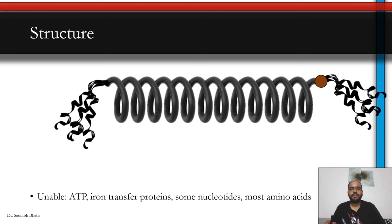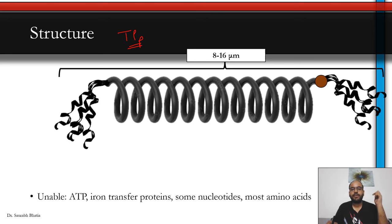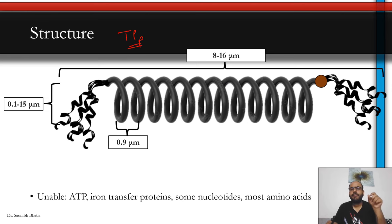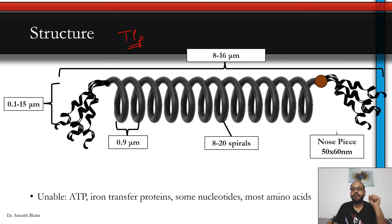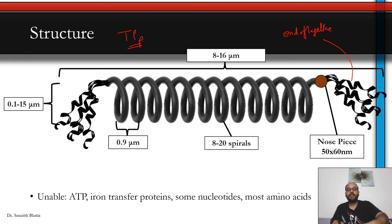This is a schematic representation of Treponema pallidum subspecies pallidum. The organism lacks the essential proteins for iron transfer, some nucleotides, and most amino acids — it is very metabolically deficient. It depends on the host organism to replenish its ATP and all the proteins responsible for metabolism. That is why this spirochete loves to live inside the body and stays there for quite a long time. For exam purposes, making a quick diagram of the spiral and labeling it is a good idea.